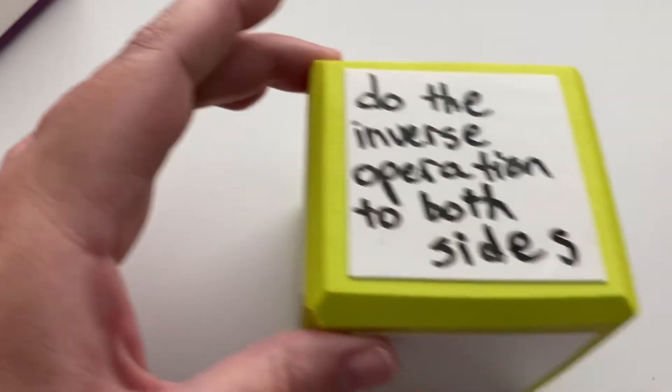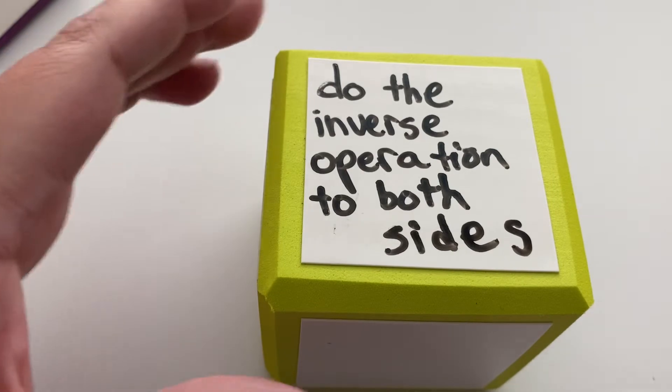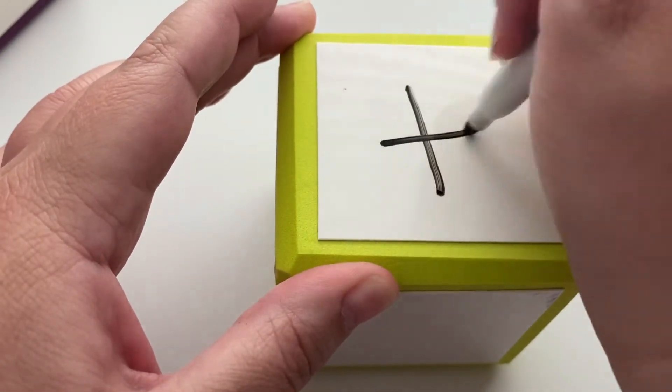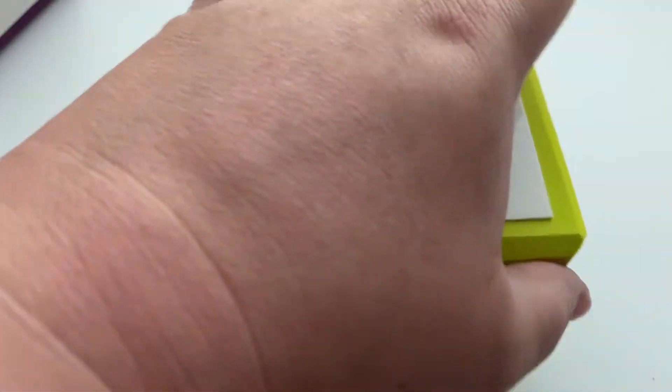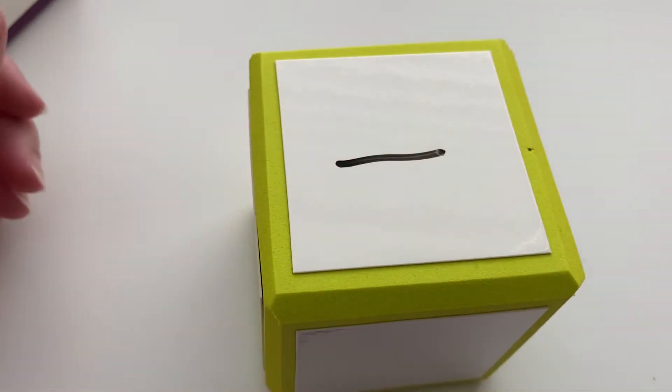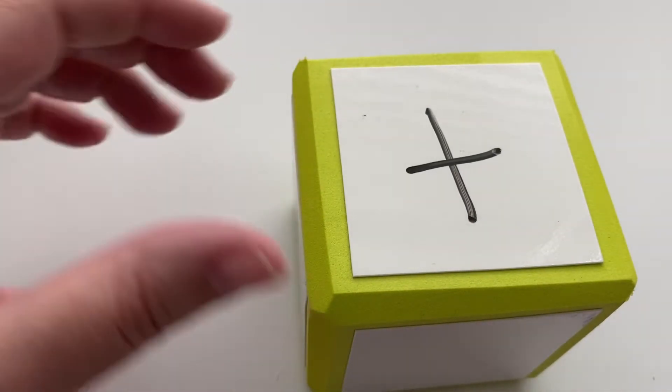That's when we do the inverse operation to both sides. Inverse means opposite. So if it's plus, the inverse would be minus. And if it's minus, the inverse would be plus. And that's all we're going to work with today.